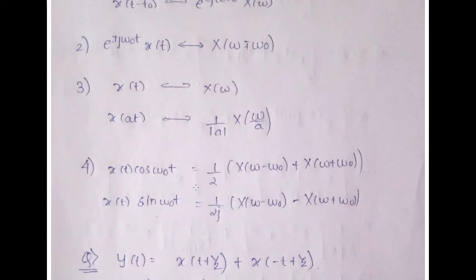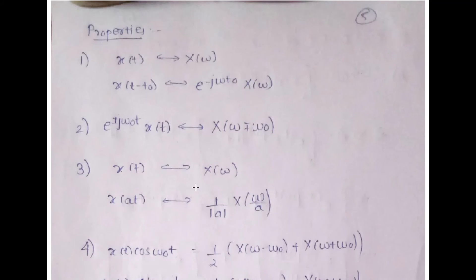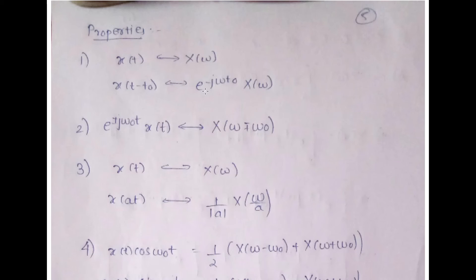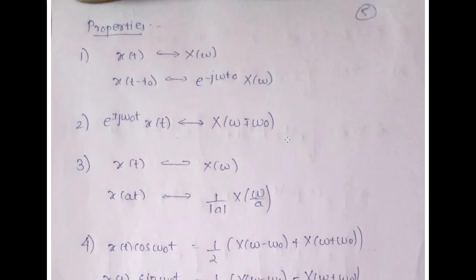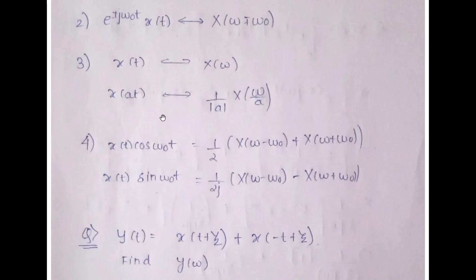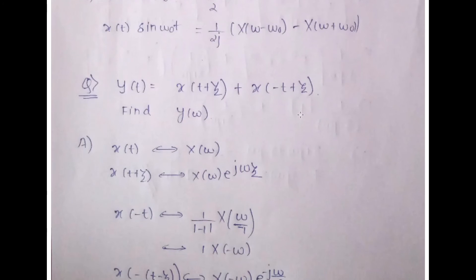Similarly, x(t)sin(ω₀t) ↔ (1/2j)[X(ω − ω₀) − X(ω + ω₀)]. To summarize: x(t − t₀) gives e^(−jωt₀) X(ω) with the same sign; e^(±jω₀t) x(t) gives X(ω ∓ ω₀) with a flipped sign; x(at) gives (1/|a|) X(ω/a). These formulas are key — keep them in mind.